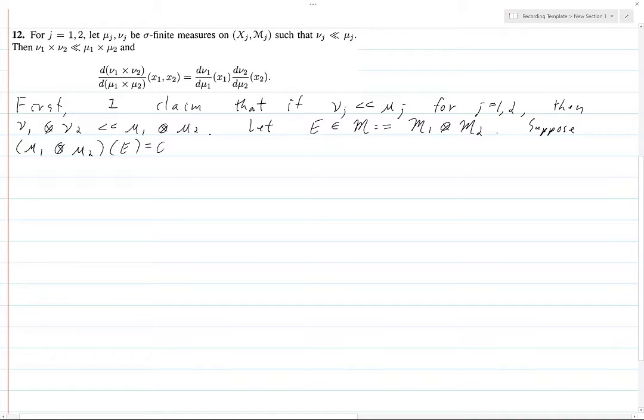Now if you recall the definition back in chapter two, what this means is this is μ_1 of E^y dμ_2(y) is equal to zero, and this is over wherever y lives - y in M_2, X_2.